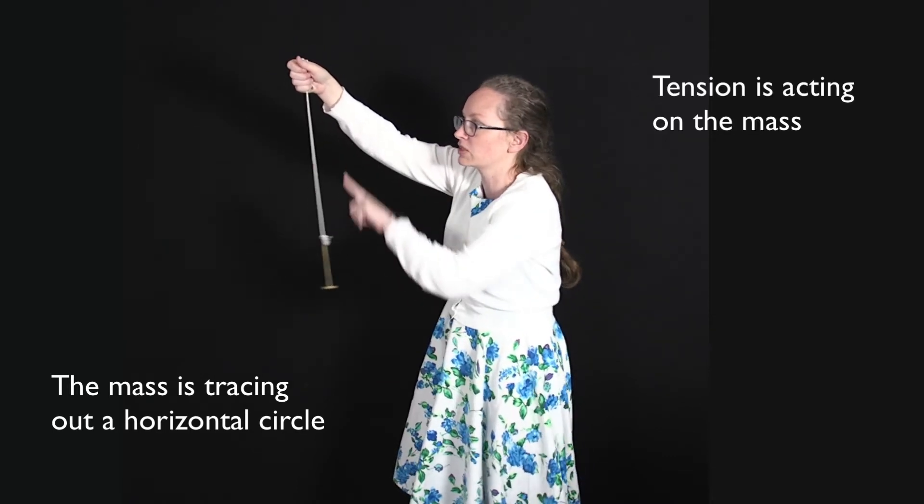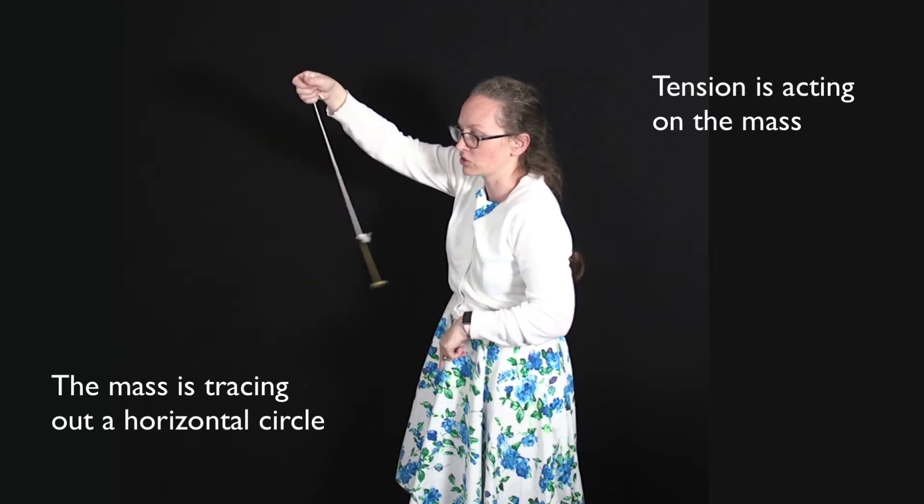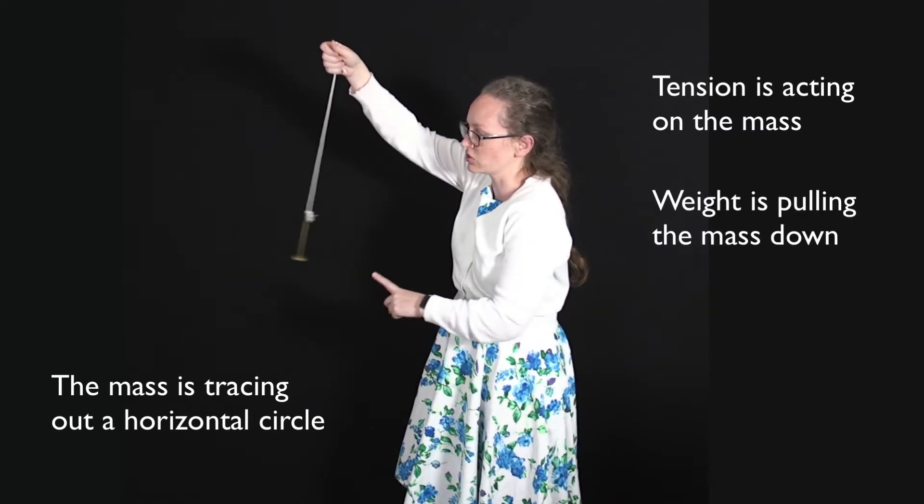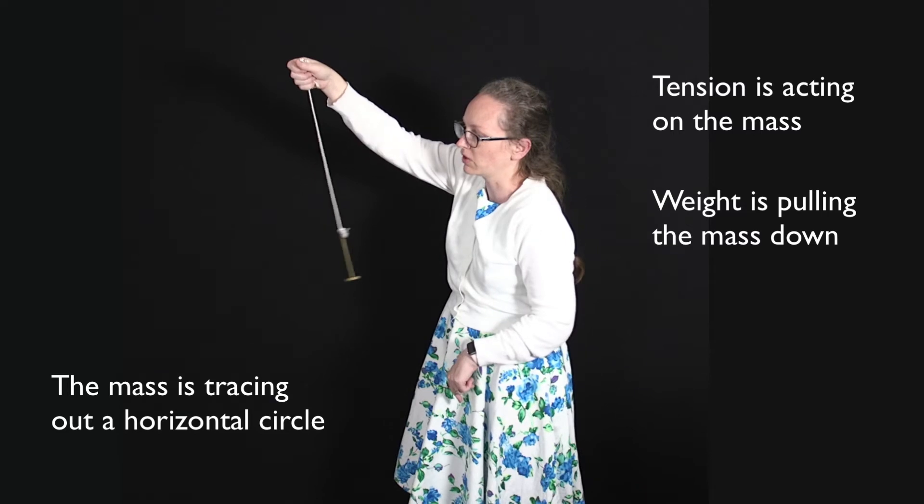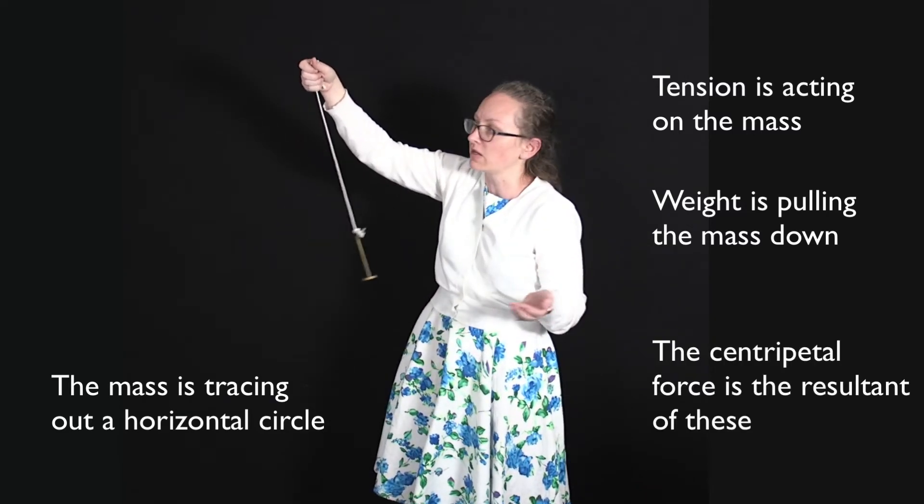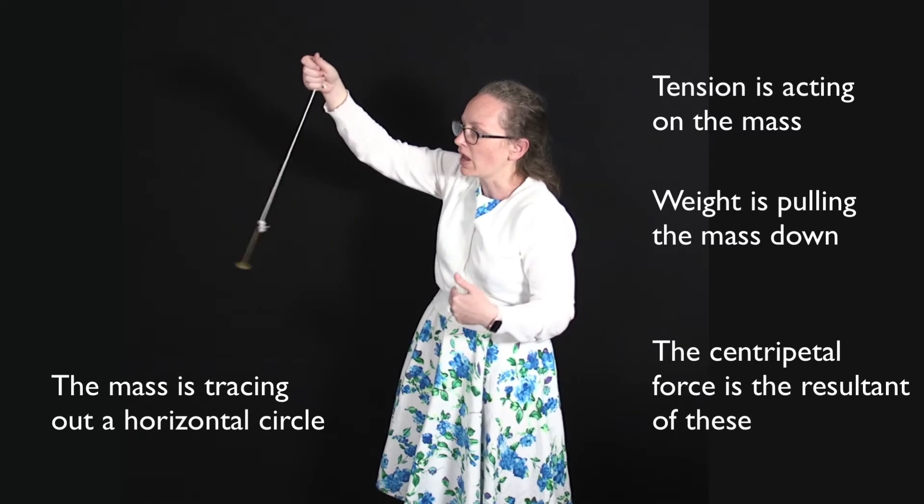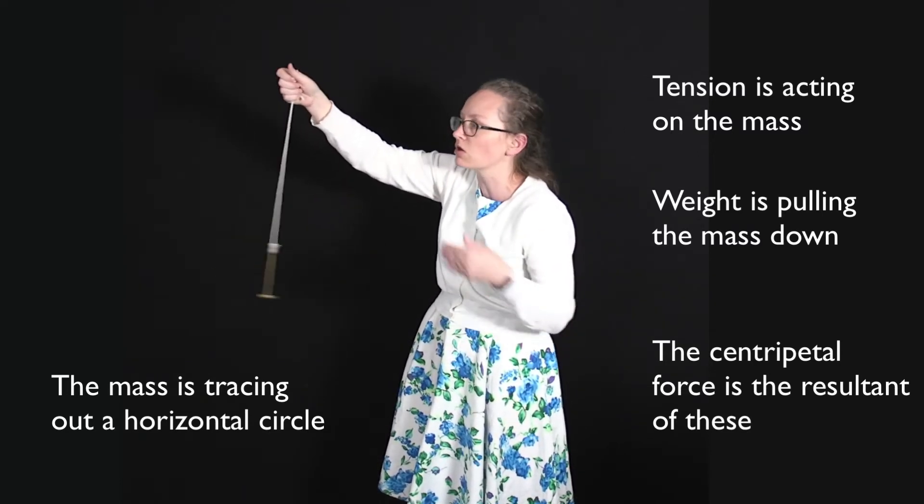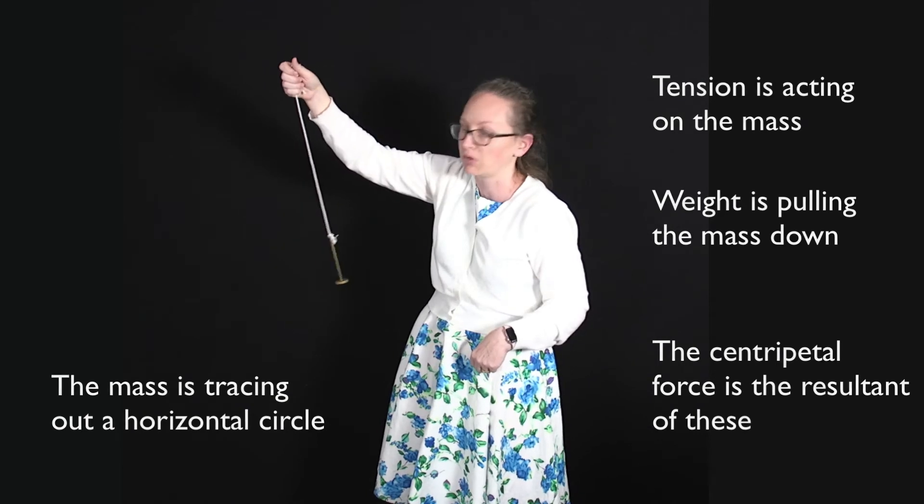It's got the tension force which is acting up the string and it's also got the weight force which is pulling it down. And the combination of these two result in it undergoing circular motion, and so the centripetal force is the resultant of these two forces acting upon it.